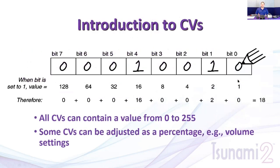Every CV has the same structure — eight bits, each assigned a value. Each bit is either on or off (one or zero — that's where 'digital' comes from). The values double across the bits: 1, 2, 4, 8, 16, 32, 64, and 128. Any number between 0 and 255 is a unique combination of those values, so the decoder knows exactly what it's supposed to do.